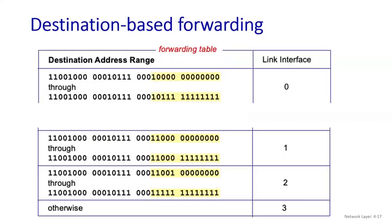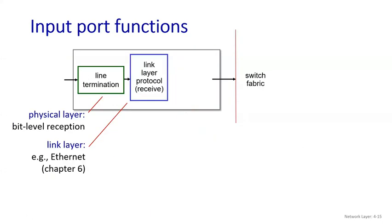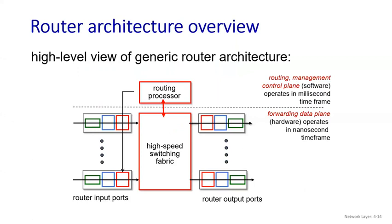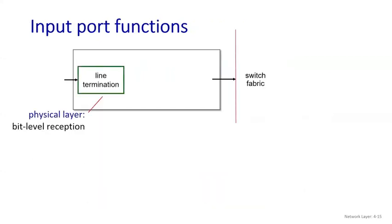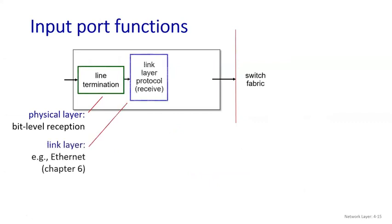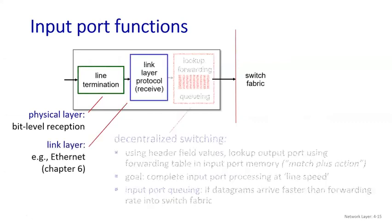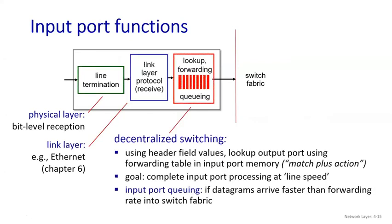Let me show you something in this diagram. You can see the green color mark, blue color mark, and red color mark. The green color mark is line termination, the blue color mark is the link layer, and the red color mark is lookup or forwarding queuing. All these things are inside your input port, and then we connect all these to your switch fabric.